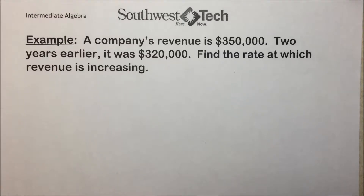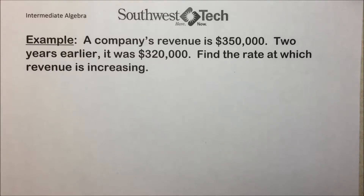Intermediate Algebra Section 2.3. Slope is a ratio that indicates how a change in the vertical direction of a line corresponds to a change in the horizontal direction, and it has many real-world applications.